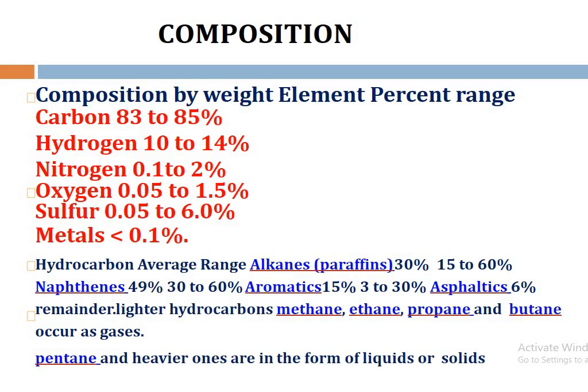Regarding the composition of hydrocarbons by weight element percentage: carbon ranges from 83 to 85%, hydrogen from 10 to 14%, nitrogen from 0.1 to 2%, oxygen from 0.05 to 1.5%, sulfur from 0.05 to 6%, and metals less than 0.1%. The hydrocarbon average range includes alkanes in the form of paraffins, naphthalenes, aromatics, and asphaltenes.